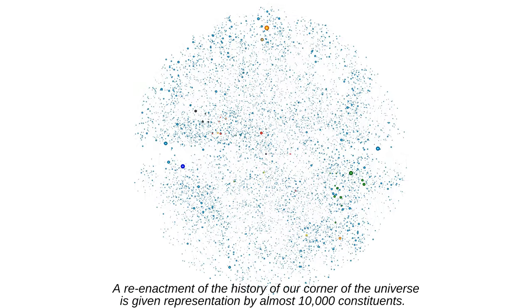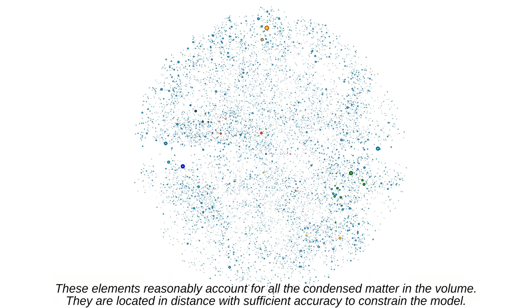A reenactment of the history of our corner of the universe is given representation by almost 10,000 constituents. These elements reasonably account for all the condensed matter in the volume. They are located in distance with sufficient accuracy to constrain the model.